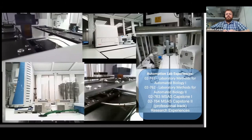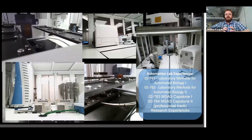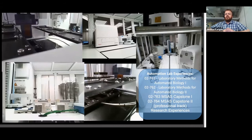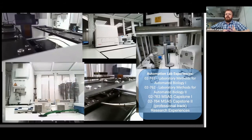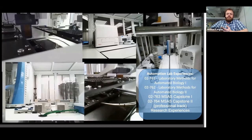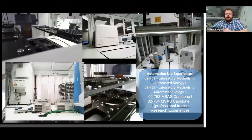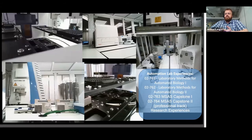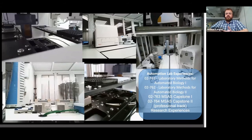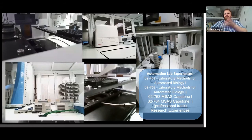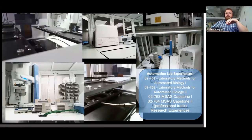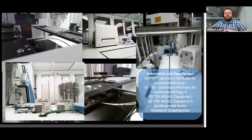The automation lab is unique in the world in that it's specifically designed primarily for teaching students how to use automation. You'll have lots of opportunities to use it: two laboratory methods courses in the first year, the two capstone courses which may use the automation lab depending on the project, and if you do MS research with a lab that could potentially be done on the robot as well. What's shown here is a video of the robot doing some work with different views and angles of the interior of the system.